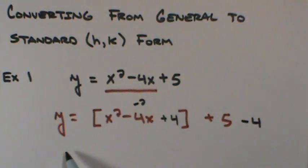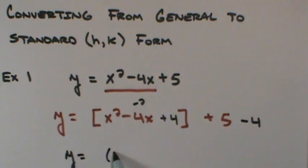And then we'll just condense it here. We can say y equals. As I condense this, this condenses to x minus 2 quantity squared. I simplify this outside, it becomes plus 1.